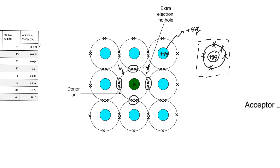These electrons are thus very easy to free up. In fact, very little energy is needed from the environment — from thermal energy — in order to free this electron and for it to become available for current conduction. The amount of energy needed is the ionization energy we saw in the table. It's a small amount, usually less than 0.1 electron volt. Notice that this is much less than the band gap energy of silicon, which was needed to create electrons and holes by thermal generation.